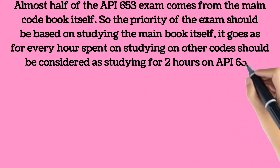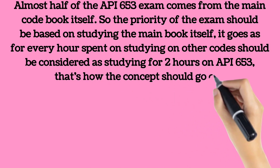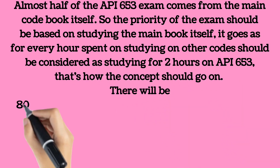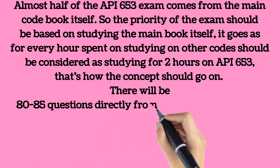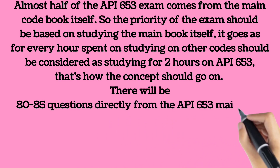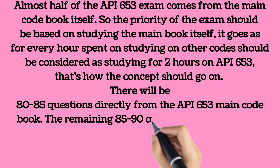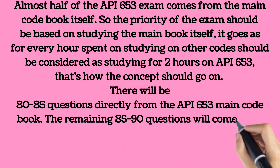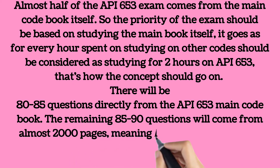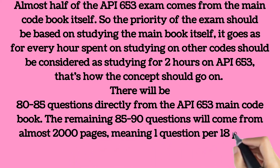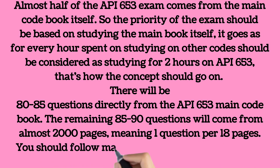API 653 has about 150 pages to study, meaning approximately one question per every two pages on average. The remaining 85 to 90 questions come from almost 2,000 pages of other material, meaning one question per 18 pages. You should follow the principle of major on the majors and minor on the minors — the level of coverage directly depends on the average number of questions expected from each subject.